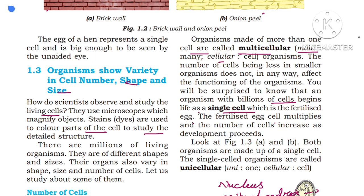The fertilized egg cell multiplies and the number of cells increases as development proceeds. Even human beings and elephants have billions and trillions of cells, but life begins from a single cell. After dividing many times, a mass of cells is formed; these cells group together to form tissues, different tissues combine to form organs, and organs together form an organ system, which ultimately forms an organism. In human beings this process takes 9 months, a period called the gestation period.